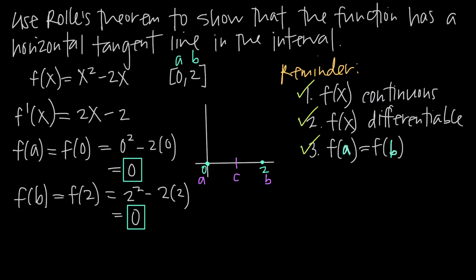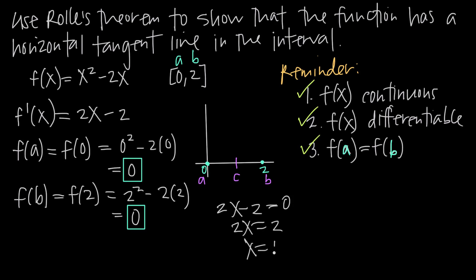The slope of the tangent line is found by taking the derivative of the original function. We already found that f'(x) = 2x - 2. We set that equal to 0 because 2x - 2 represents the slope of the tangent line. Setting 2x - 2 = 0 and solving: adding 2 to both sides gives 2x = 2, then dividing both sides by 2 gives x = 1.